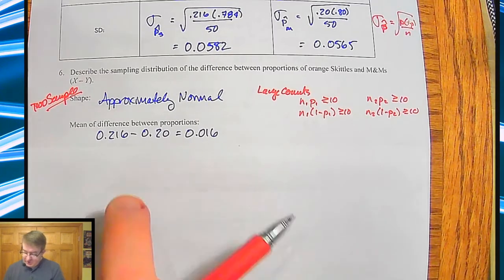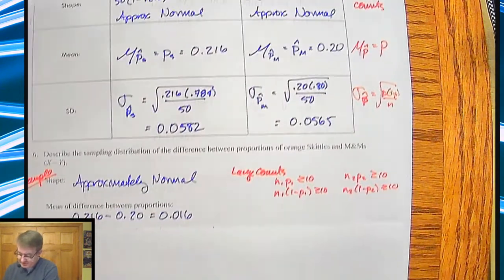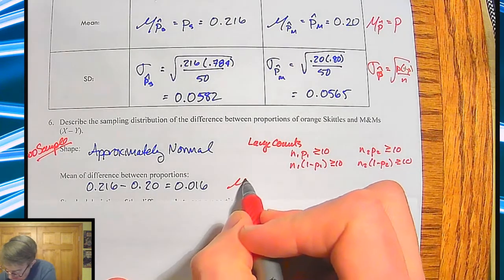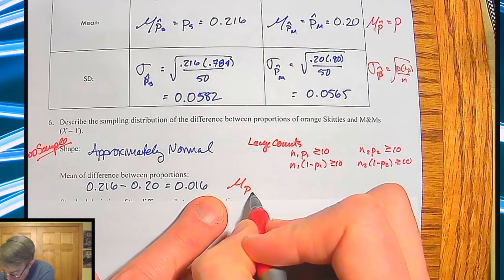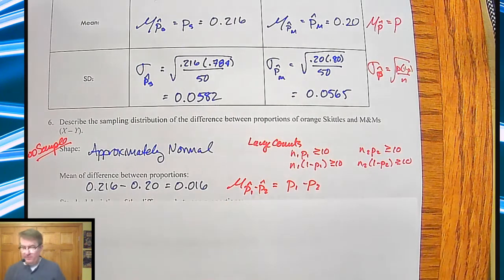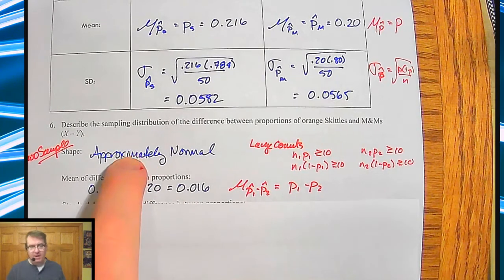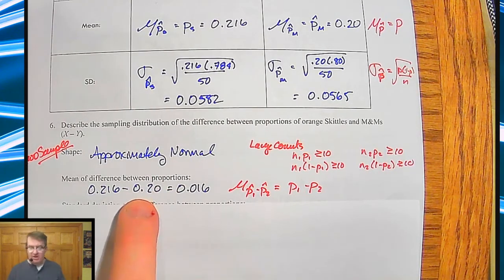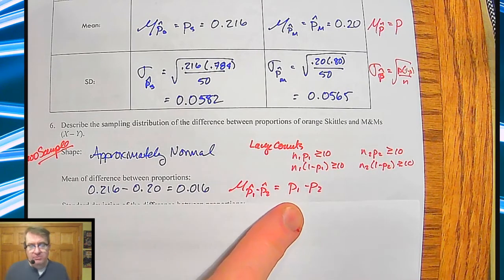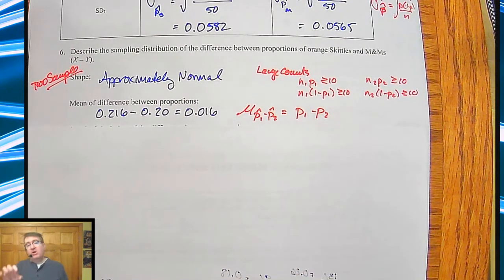For the difference of the means: the mean of the difference of the two sample proportions is just the difference between the two population proportions. So the mean is 0.216 minus 0.20 = 0.016. This doesn't seem super complicated — and it's not. You just need to slow down to avoid silly mistakes. Both populations are normal, and you can subtract the two proportions from the populations.